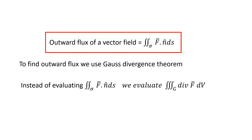To find the outward flux of a vector field we use the formula: double integral over sigma of F dot n dS. Now, to find the outward flux we use Gauss Divergence theorem — instead of finding the double integral F dot n dS, we usually find the triple integral over G of the divergence of F dV.